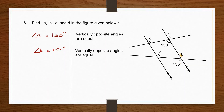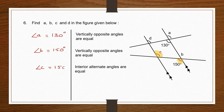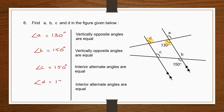Moving on to angle C: angle C and 150 degrees are interior alternate angles, and interior alternate angles are equal, therefore angle C is equal to 150 degrees. For angle D: angle D and 130 degrees are interior alternate angles, and interior alternate angles are equal, so angle D equals 130 degrees.